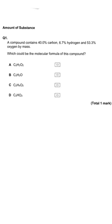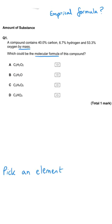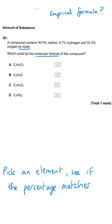This question gives us some percentage by mass data for a compound and we're being asked what the molecular formula could be, with four options. It's sort of making you want to do an empirical formula calculation for each of them, but you don't need to do that. What you need to do is look at the percentages of one of the elements only and see which of these formulae match.